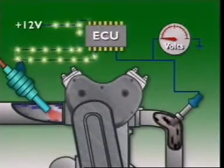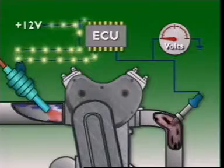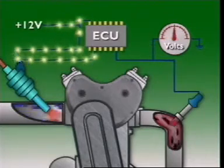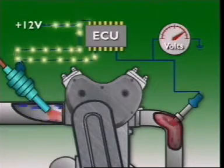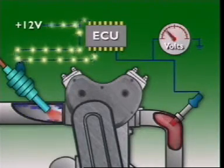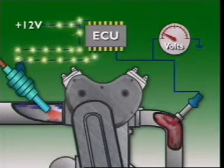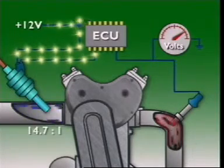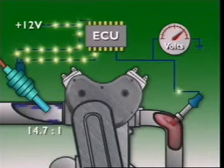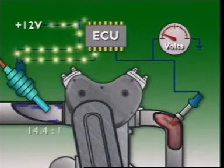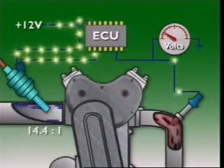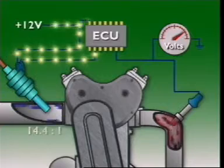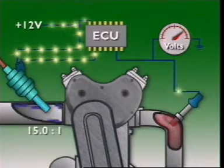When the lambda sensor reaches its operating temperature, around 350 degrees, it sends an output voltage to the control unit to signal whether the mixture is richer or leaner than a lambda value of 1, that is, the air-fuel ratio of 14.7 to 1, also called the stoichiometric point. When the mixture deviates from this, the output voltage changes sharply.